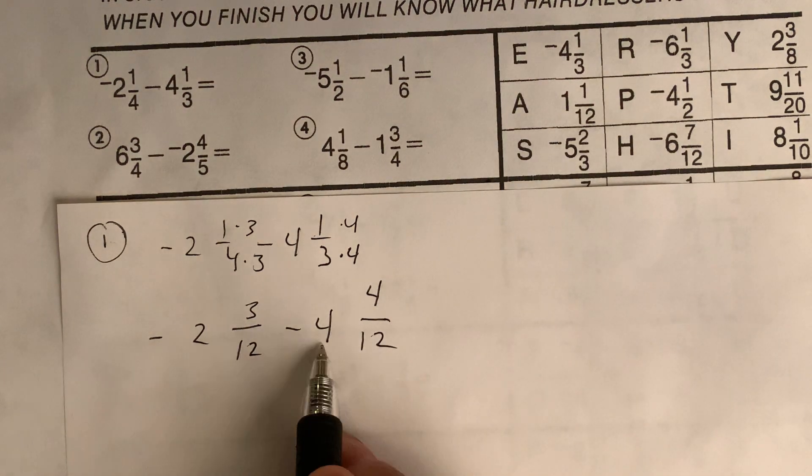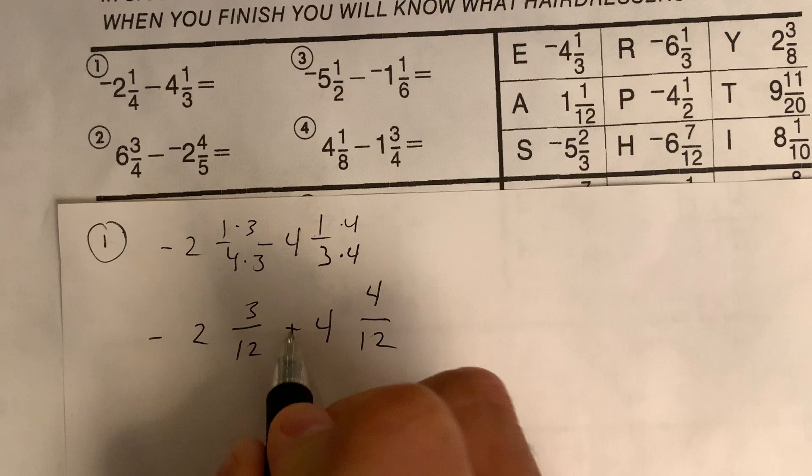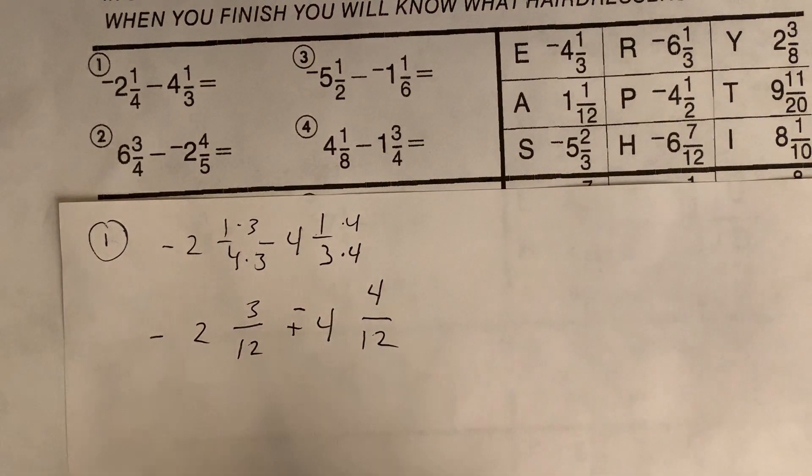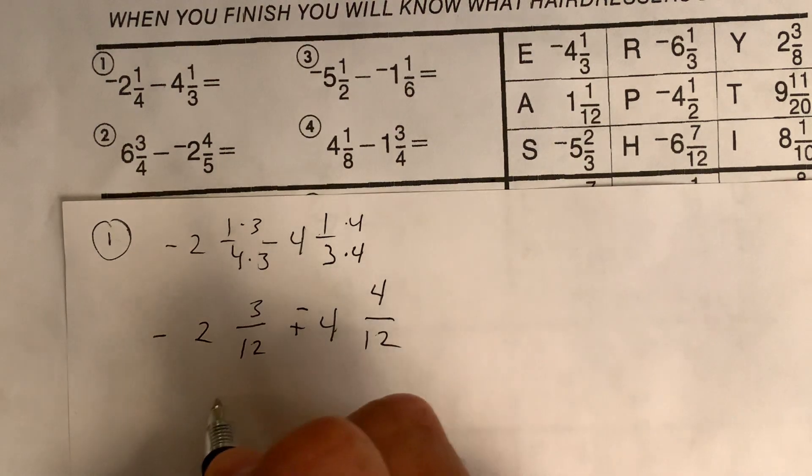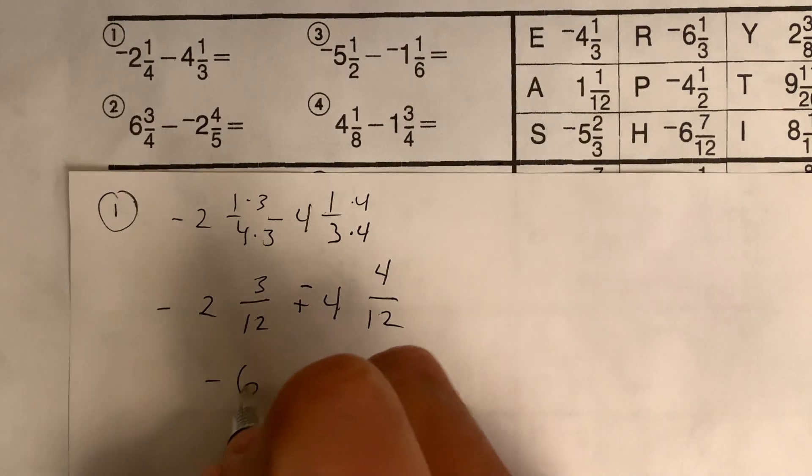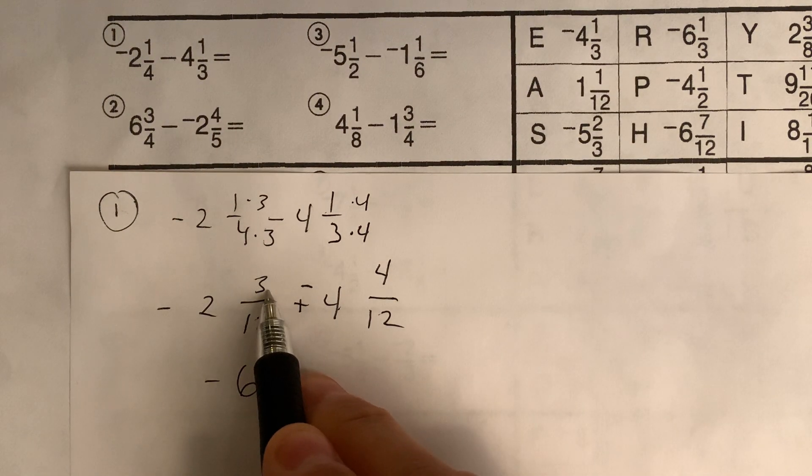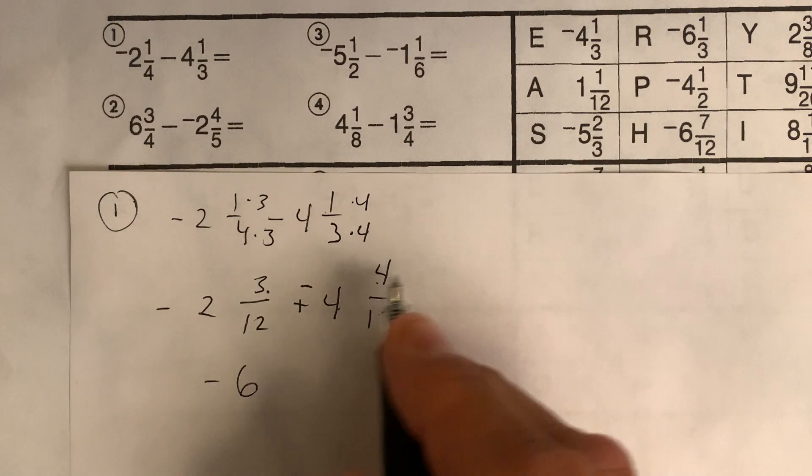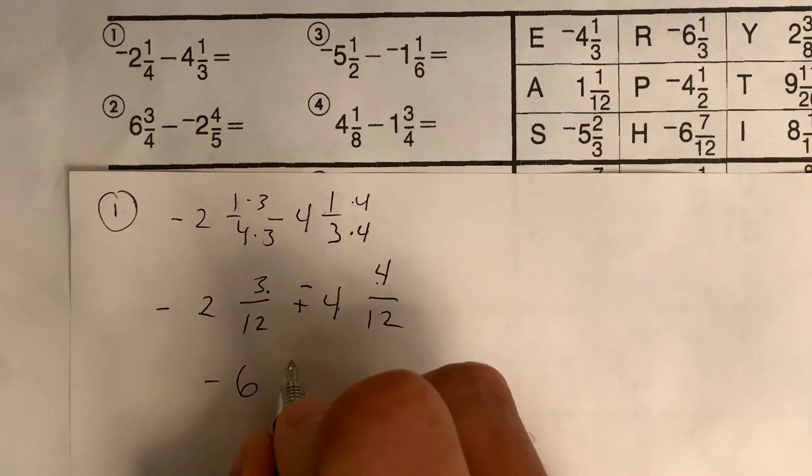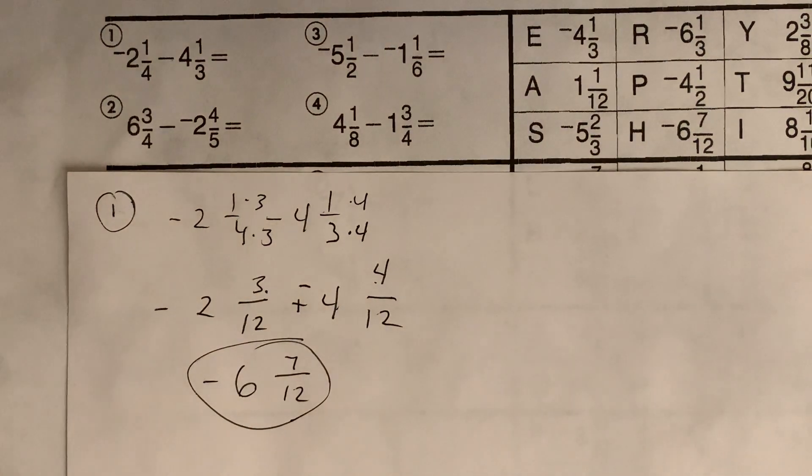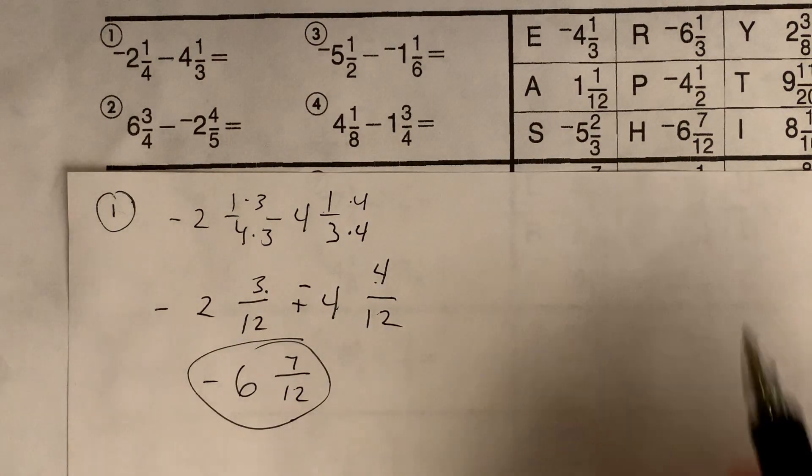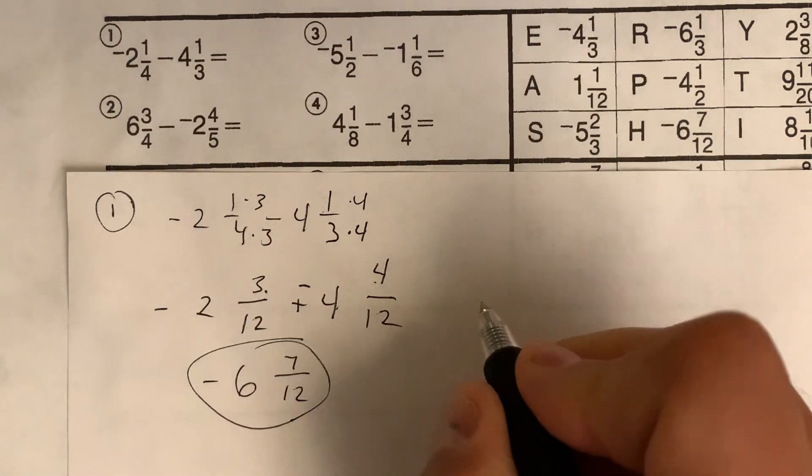Now, here's the thing. We're doing this as subtraction, which is really the same as plus a negative. So now you're adding two negatives. Just combine them. So negative two and negative four is negative six. Negative three and negative four. They're negative also, but you don't put negative in front of them. That's seven twelfths. So that's the answer we got. Let's see if that's over here. I hope it is. There it is right there. H. So the first one's H.